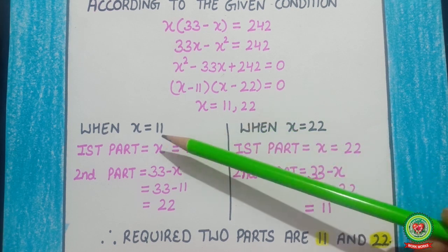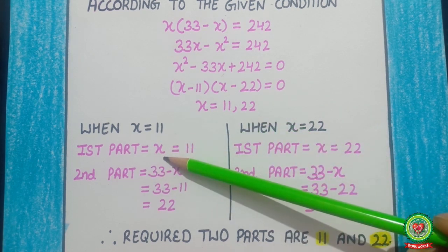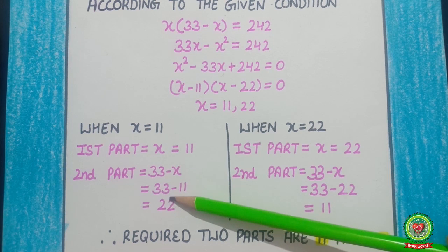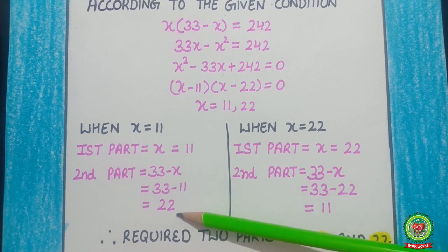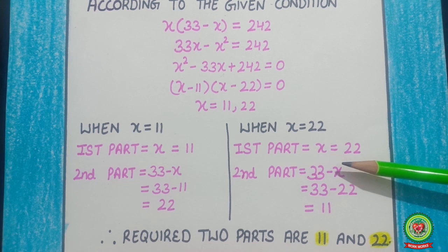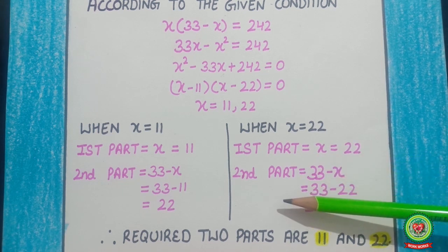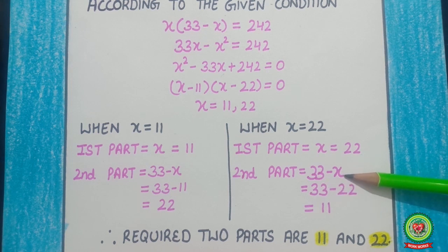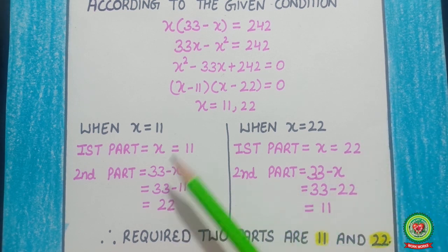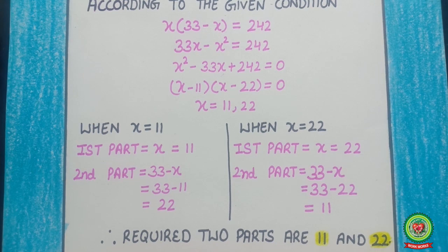When x equals 11, the first part is x = 11 and the second part is 33 minus 11 = 22. When x equals 22, the first part is 22 and the second part is 33 minus 22 = 11. Therefore, the required two parts are 11 and 22, because in both values the answers are the same. This is the first example related to word problems.